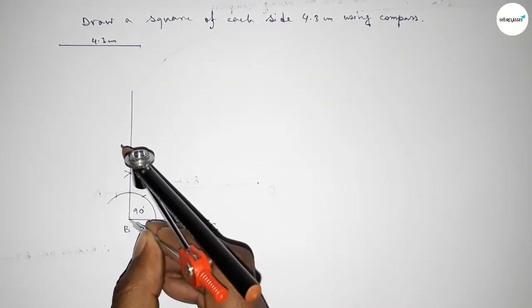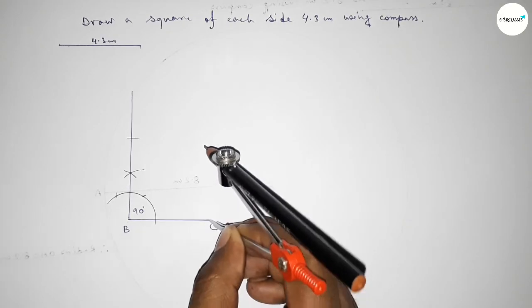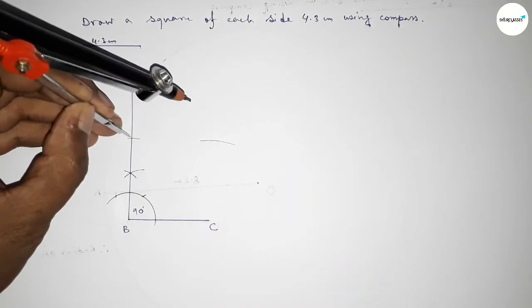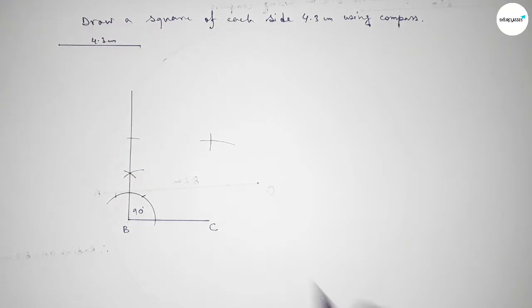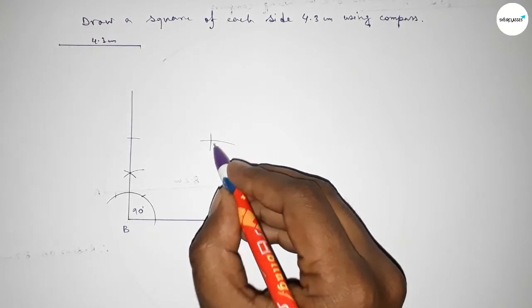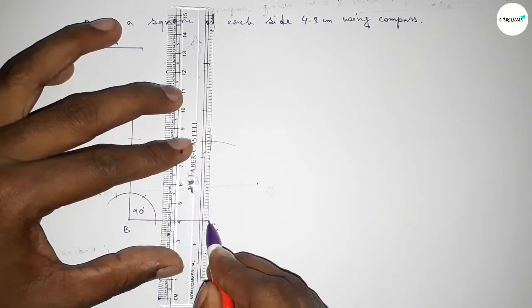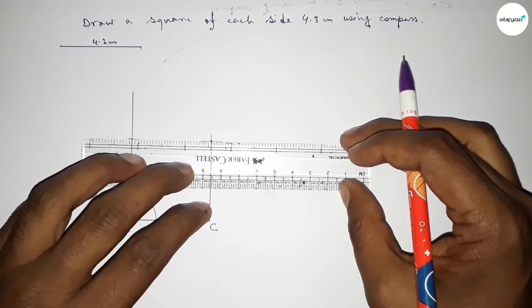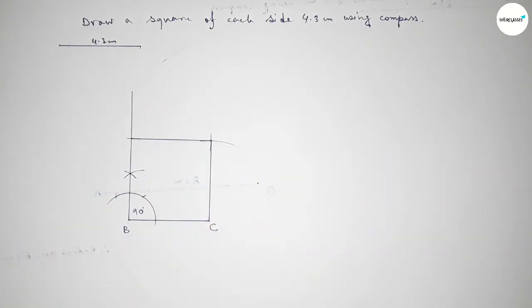Putting the compass on point B and cutting here. With the same length, putting the compass here and drawing an arc. Again with the same length, putting the compass here and cutting — both curves intersect at a point. Now joining this line, then joining this line to get the square.